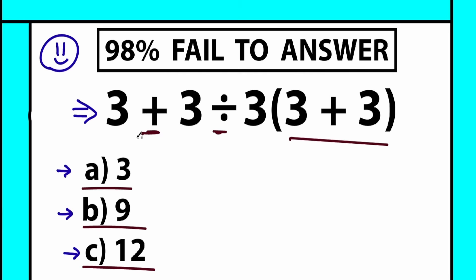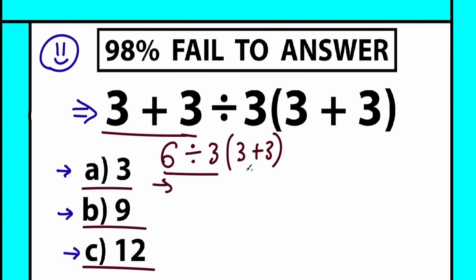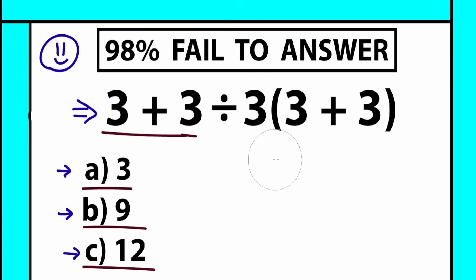A lot of students might say, let's start from left to right — start with addition, so 3 plus 3 equals 6, then go to the next steps with division by 3 and 3 plus 3 inside parentheses. But to be honest, this is an absolutely random method, and it's not a good method in terms of math. We can't solve a question randomly — we can't just do whatever we want.